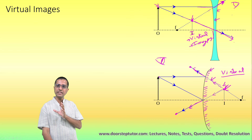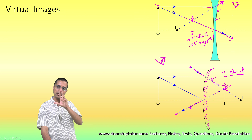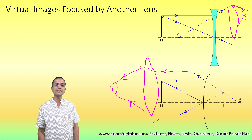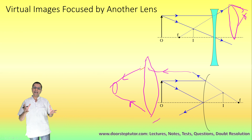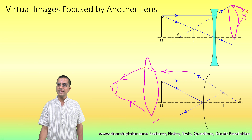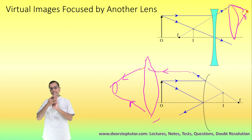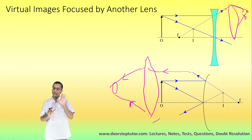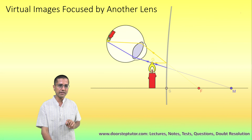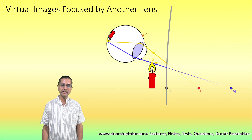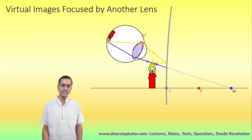In the case of virtual images, that is not possible because the photons are not converging to a point. Instead, I have to put more lenses or instruments into the path of the real photons to make them converge at a point. Virtual images can only be taken on a screen by using additional appliances or lenses — they cannot directly be projected on a screen. One such instrument is our eye.